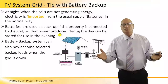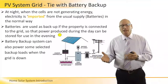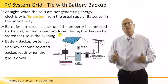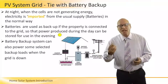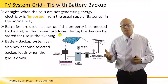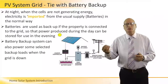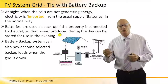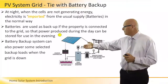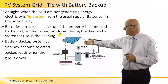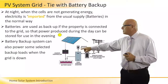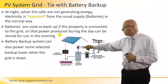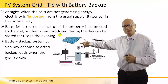Some grid-tie systems have battery backup. At night, when the cells are not generating energy, electricity is imported from the usual supply or batteries in the normal way. The battery is used as a backup when the property is connected to the grid, so that power produced during the day can be stored for use in the evening when there is no sun. Battery backup systems can also power selected backup loads when the grid is down — we can see a backup AC load above the dual-purpose inverter, which the battery supplies via the inverter when there is no current from the grid.